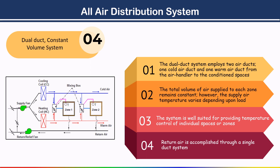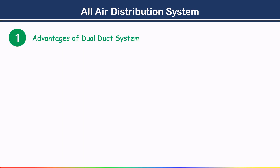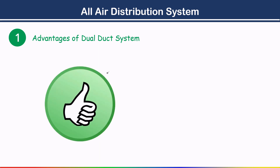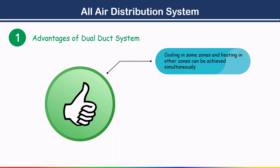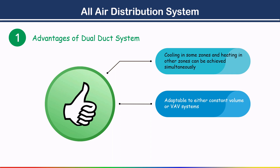Advantages of the dual duct system: First, cooling in some zones and heating in other zones can be achieved simultaneously. Second, the system is adaptable to either constant volume or VAV operation. Third, no seasonal changeover is necessary.